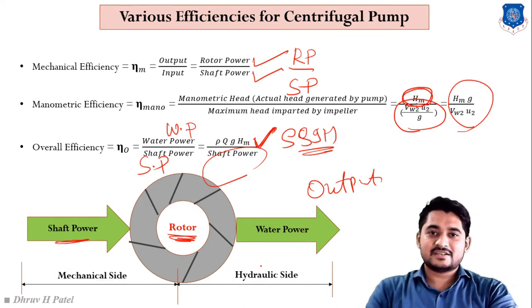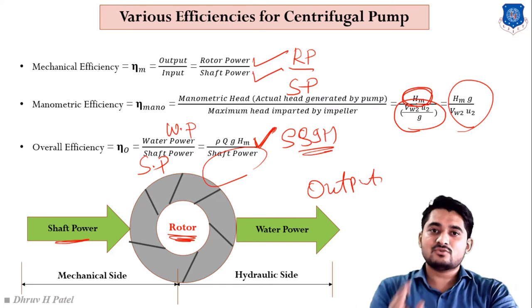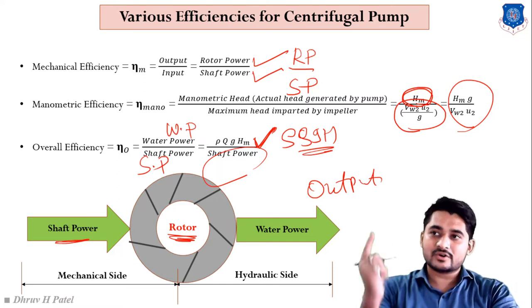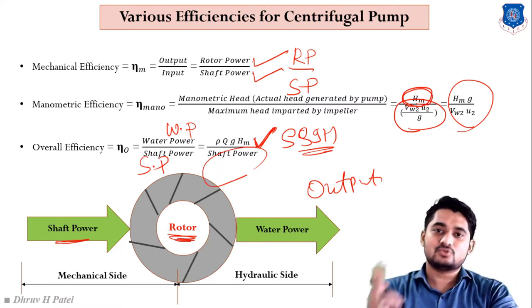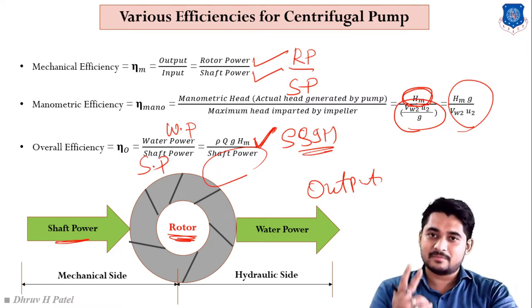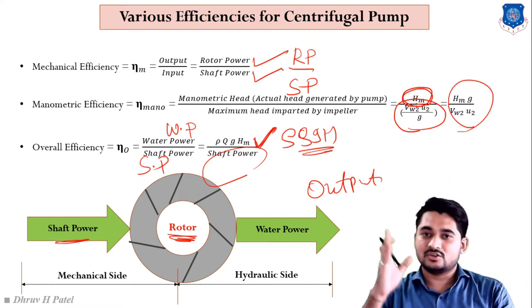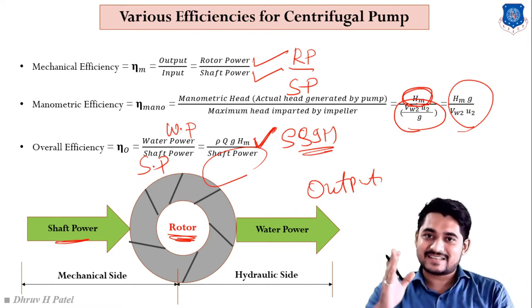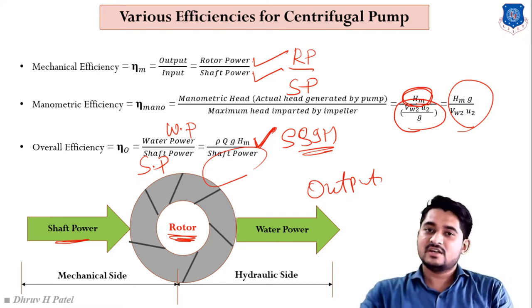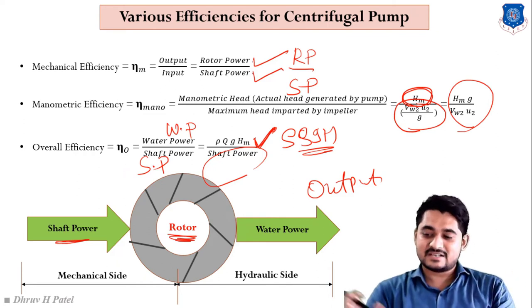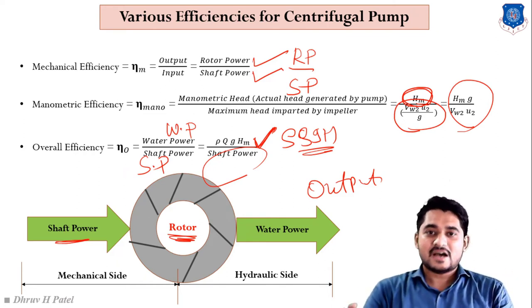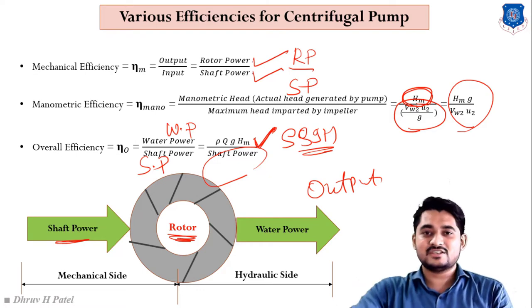These are the three efficiencies related to the centrifugal pump. For easy understanding, we divide the overall action into two segments: first, shaft power to rotor power (mechanical side), and second, rotor power to water power (hydraulic side). You can derive all efficiency equations from this division.